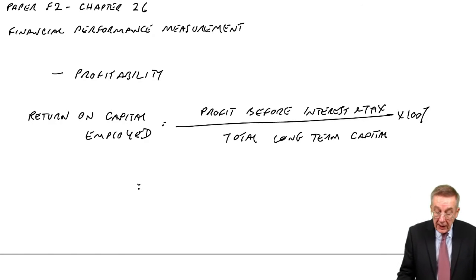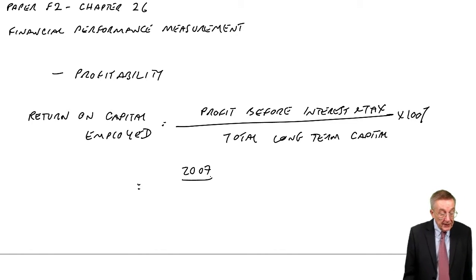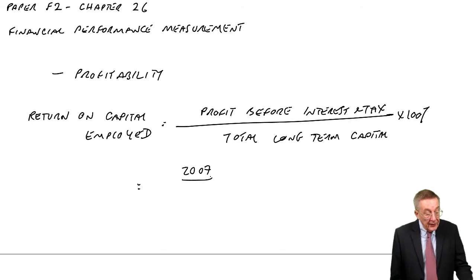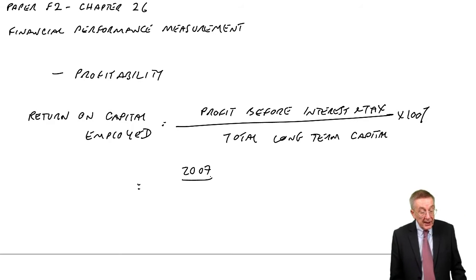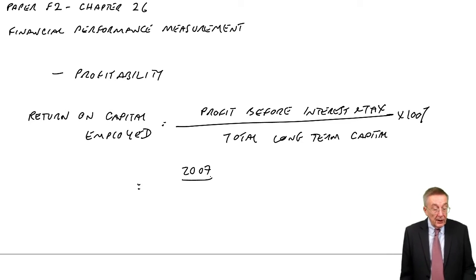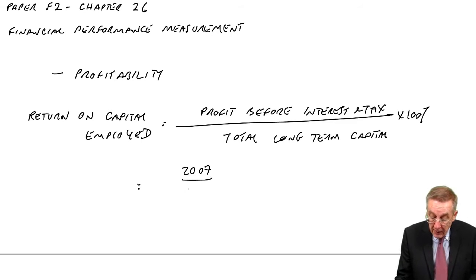So before I talk more about the reasoning, let's have a look in each of the two years. In 2007, if you look at the profit statement, although the final profit was 478, that was after tax. So the profit before tax was 740, but that was after finance costs, which are another word for interest. And so the profit before interest and tax, or the profit from operations, is 790.